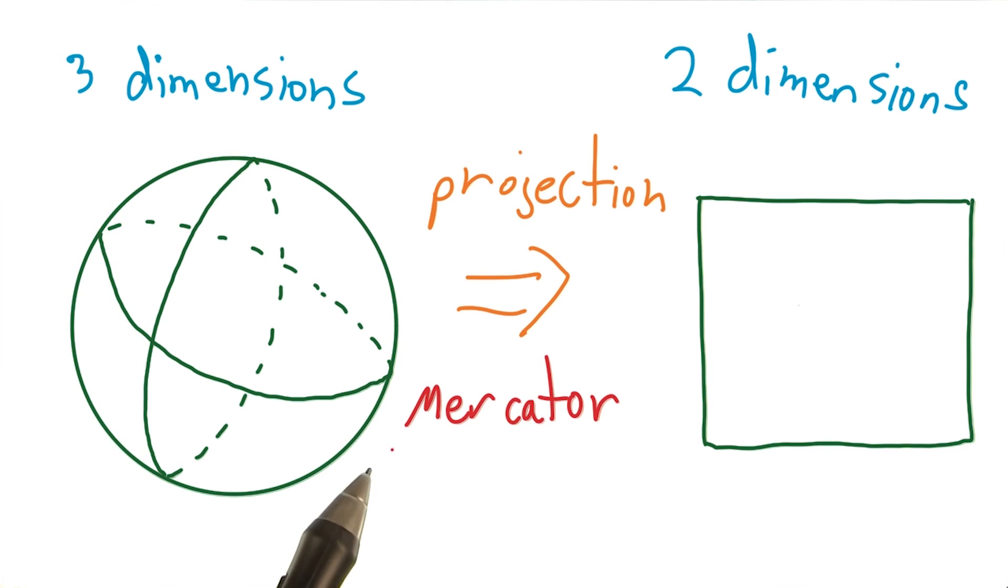And the Mercator projection does just that. It decides to distort the least populated regions, more simply, regions near the poles.